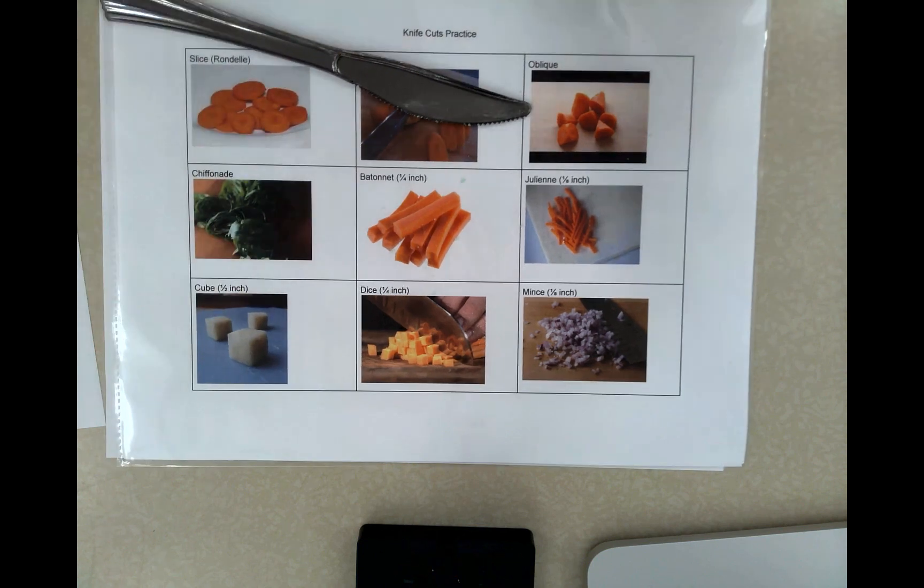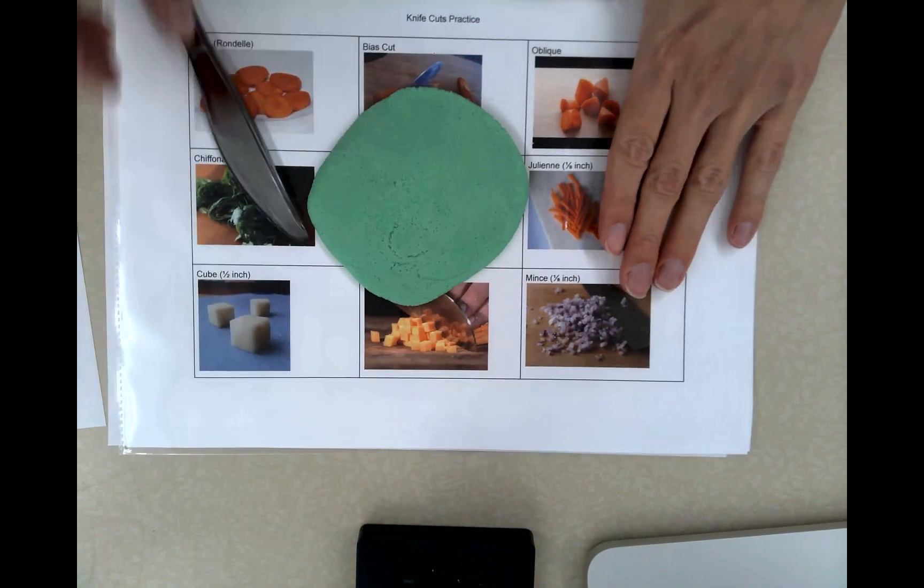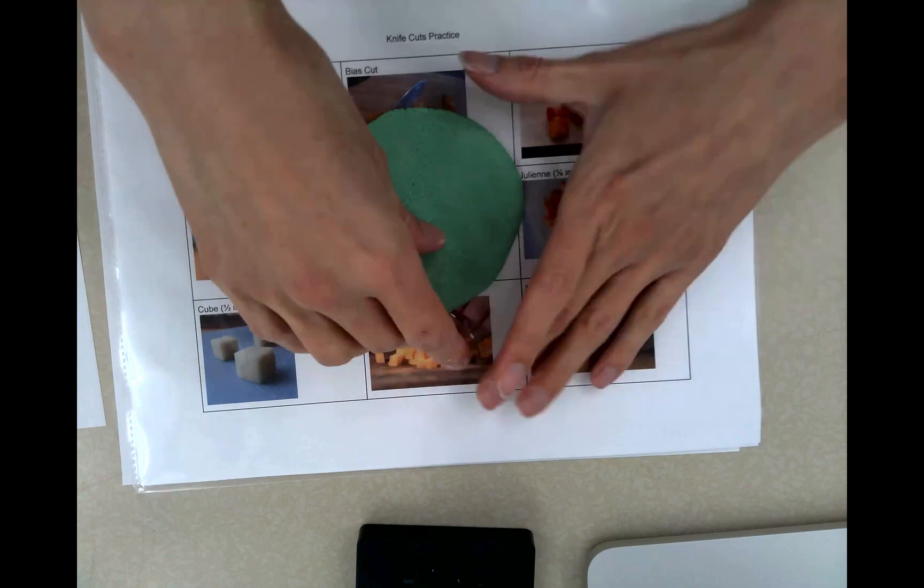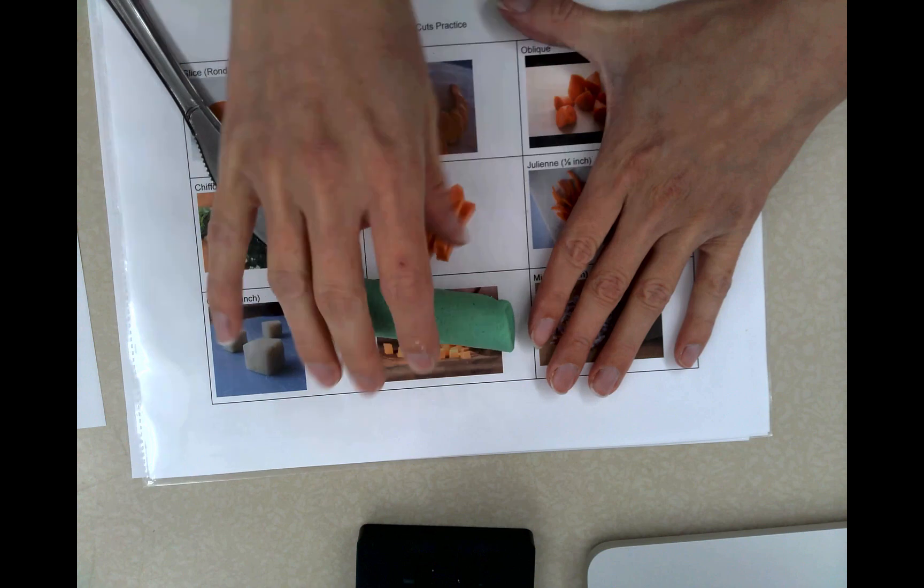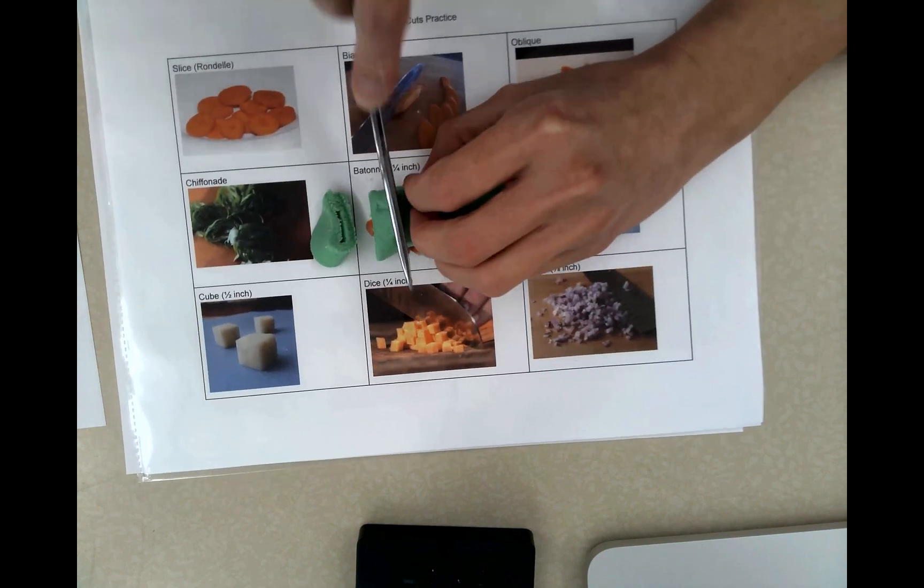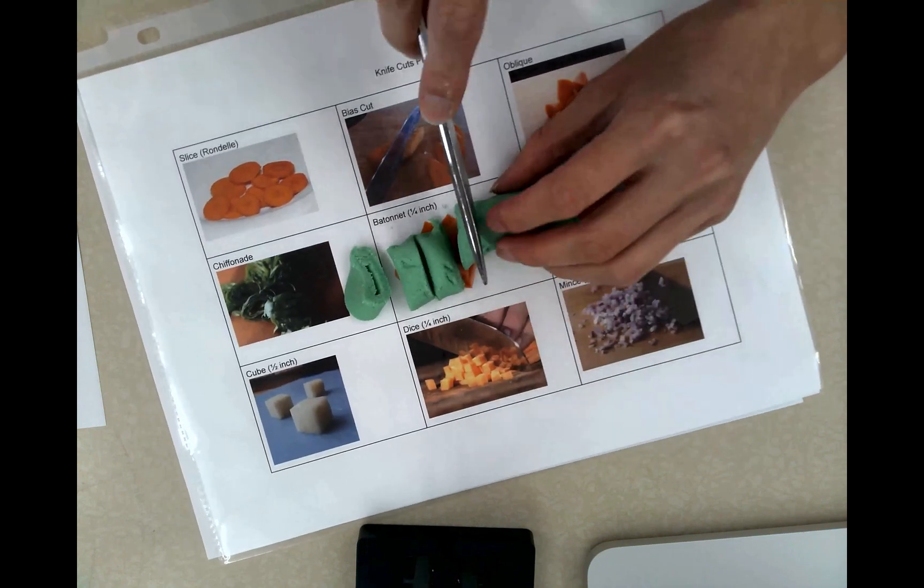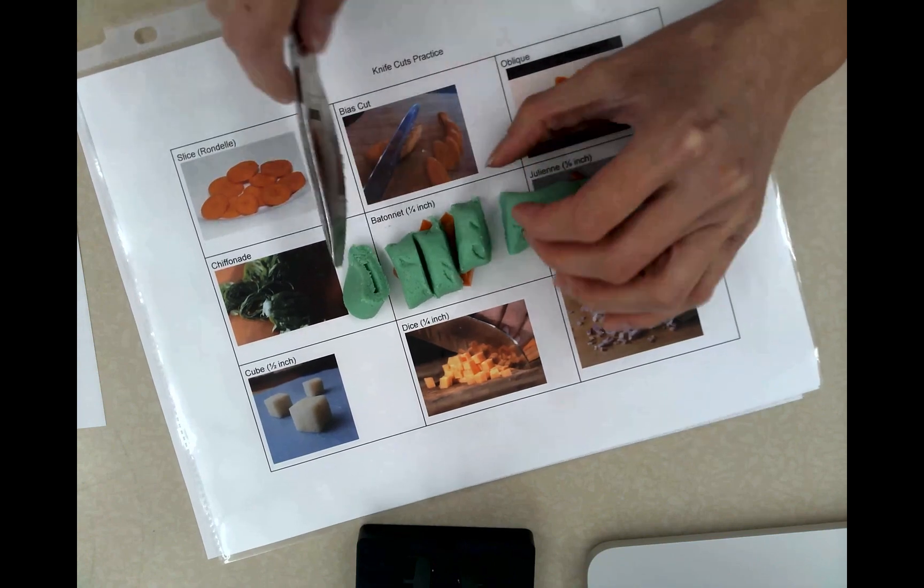The next one is a chiffonade. And so that is where we need to look at your lettuce or a leafy green. And so we're just going to flatten out a piece of play-doh into that leaf. And then we're going to take it and we're just going to roll it up. And then again, we're going to just slice through this. And then unfortunately, it's kind of smashing it together. But you get the idea of what that would look like. Add one to my chart.